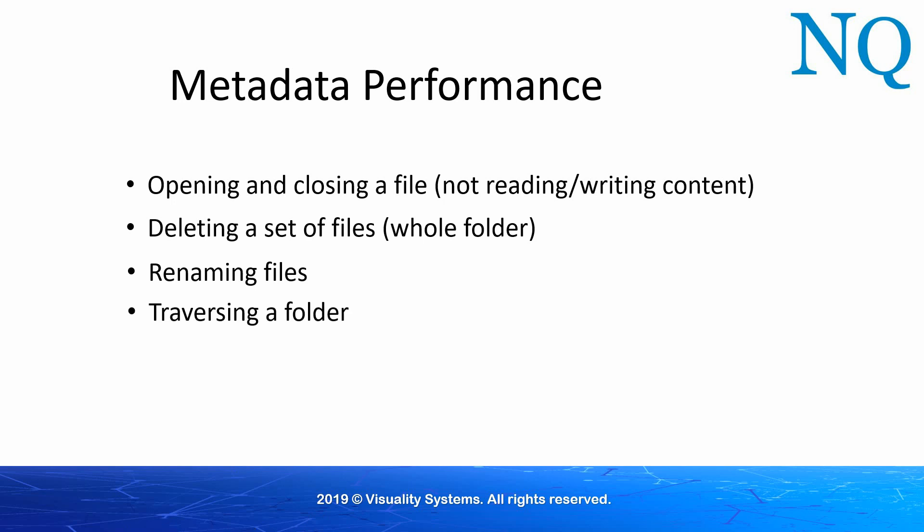Surprisingly, a server that performs very fast file downloading or uploading sometimes behaves worse when a client deletes an entire folder of files, renames a set of files, or performs a directory traversal. Another factor influencing metadata performance is caching. For instance, a client can keep a file handle open for future transactions, which avoids reopening the file. Metadata caching was significantly enhanced in newer SMB dialects, where an entire directory listing can now be cached by a client.